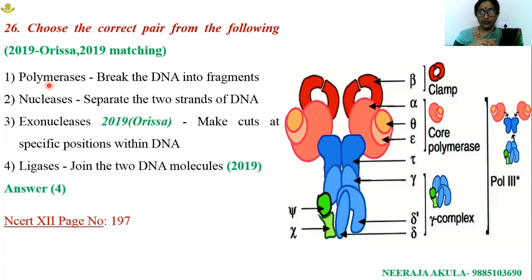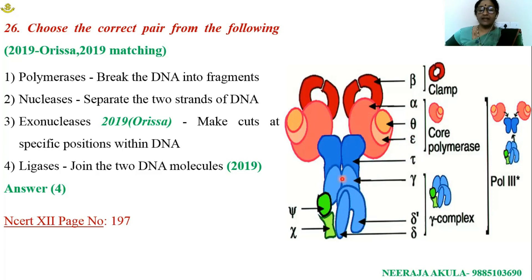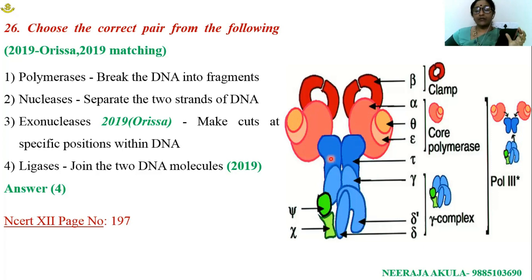DNA polymerase III is a holoenzyme associated with different subunits: alpha, beta, and theta. During the process of replication, DNA polymerase is coupled with different types of enzymes: helicase, topoisomerase, single-stranded stabilizing enzyme, ligases, and DNA polymerase I. These are the various enzymes required for DNA replication.